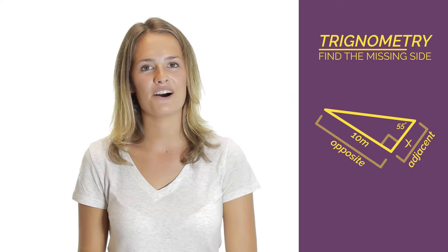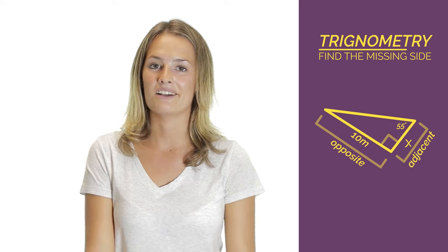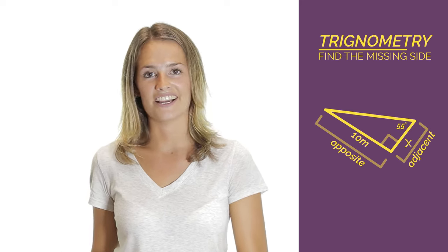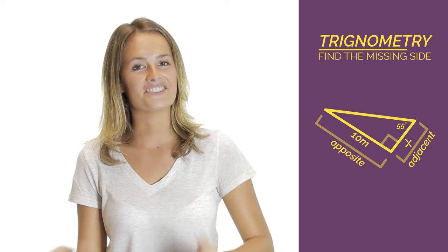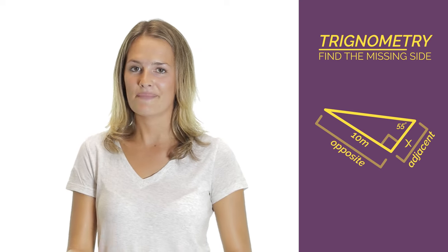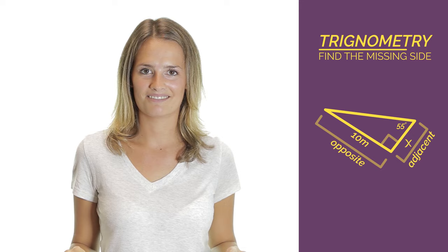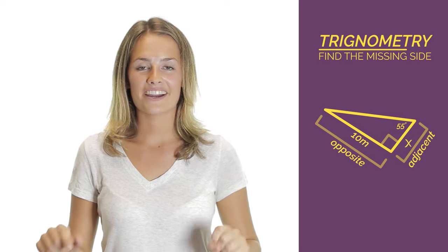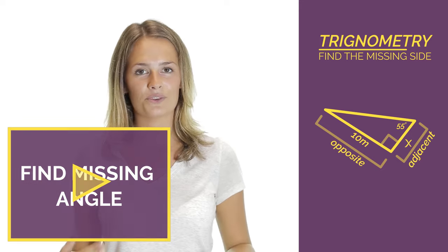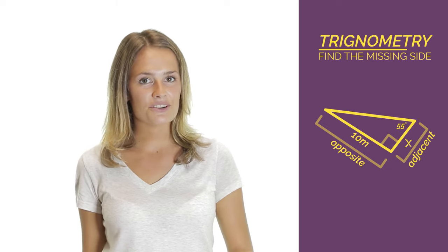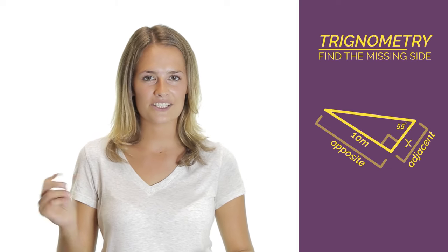So from this two part video you should be able to find a missing side when you already have a side and an angle. You just need to use Sokotoa and make sure you label the sides correctly. In the next video we're going to look at how to find a missing angle when we already have two sides. We still use Sokotoa and then there's just a little twist.